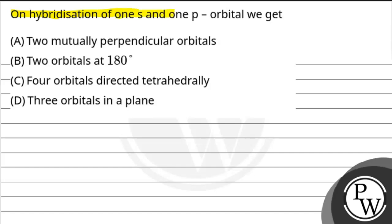on hybridization of 1s and 1p orbital, we get option A, 2 mutually perpendicular orbitals, option B, 2 orbitals at 180 degrees, option C, 4 orbitals directed tetrahedrally, option D, 3 orbitals in a plane.